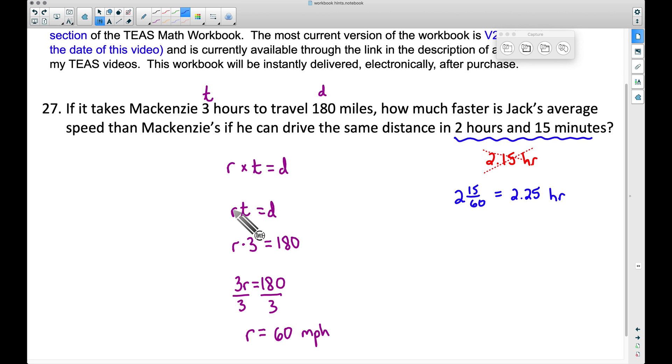Let's go back to our formula. Rate times time equals distance. We're trying to find Jack's rate, and we're going to multiply this by the time that he travels, which is 2.25 hours. This is going to be equal to Jack's distance. You may say, what is Jack's distance? He's going the same distance, so we're still going to use 180. You can write this as 2.25R equals 180.